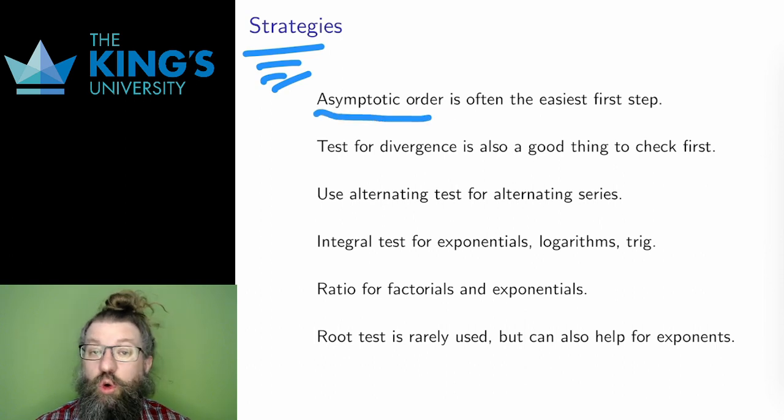The asymptotic order is usually the first thing I look at. If I can find an asymptotic comparison easily, that's often the most efficient test. The test for divergence is another good early technique. Look at the limit of the terms and if that limit is not zero, then you know convergence is impossible and you can get rid of a bunch of series this way with a very quick limit.